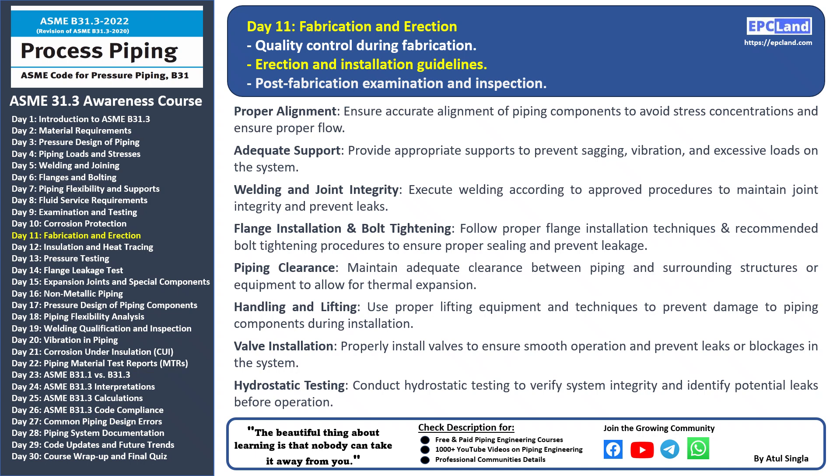Proper alignment: it's important to align piping components accurately to avoid stress concentration and ensure smooth fluid flow. Adequate support: providing the right supports is essential to prevent sagging, vibration, and excessive loads that can compromise the system's integrity. Welding and joint integrity: follow approved welding procedures to maintain the integrity of joints and prevent potential leaks. Flange installation: properly installing flanges is crucial for effective sealing and preventing any leakage from connections.